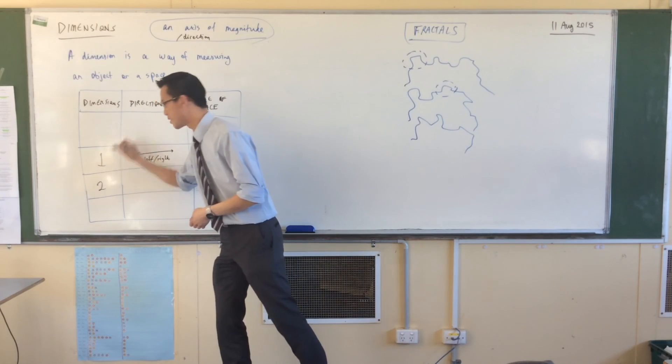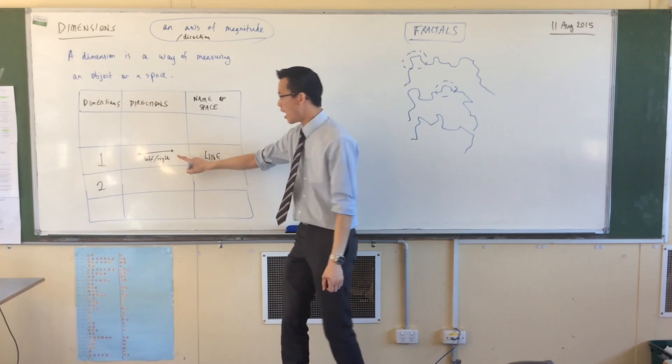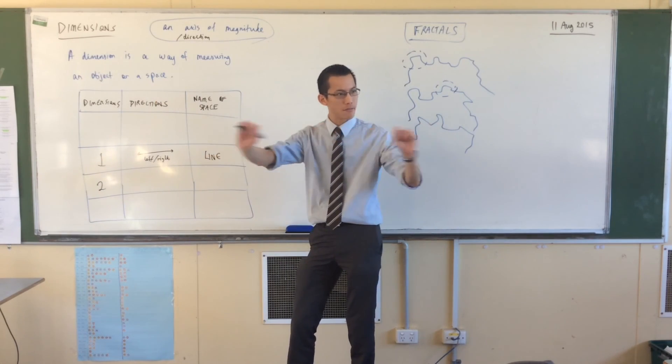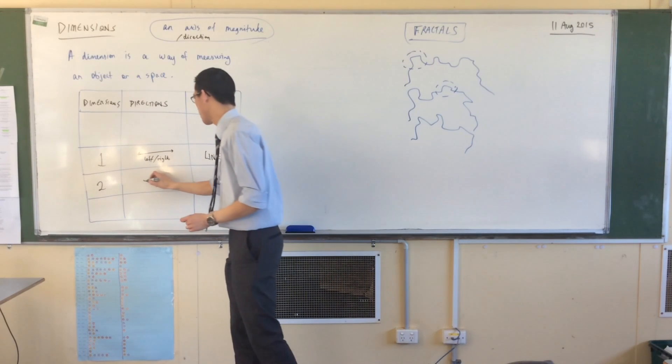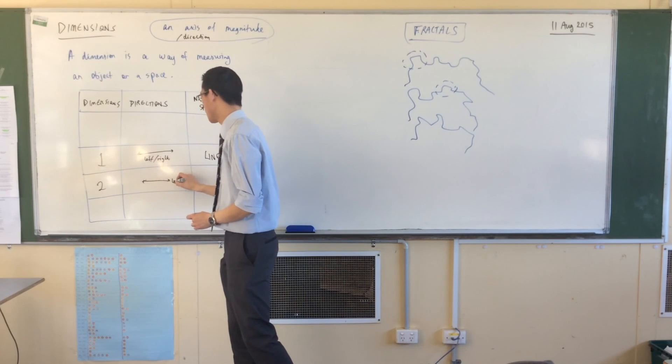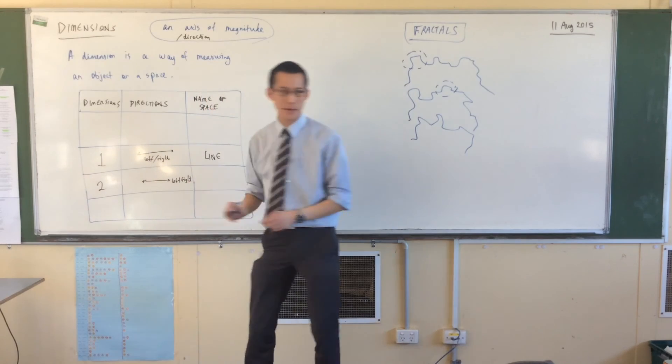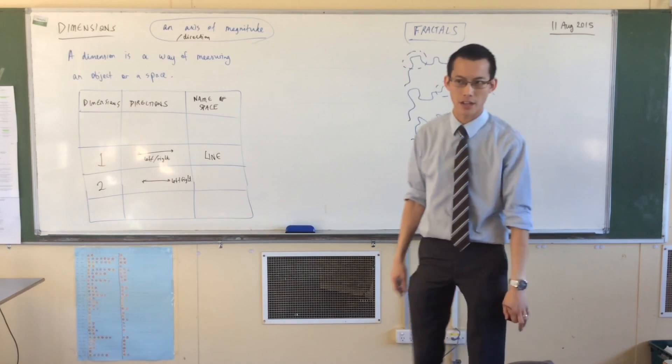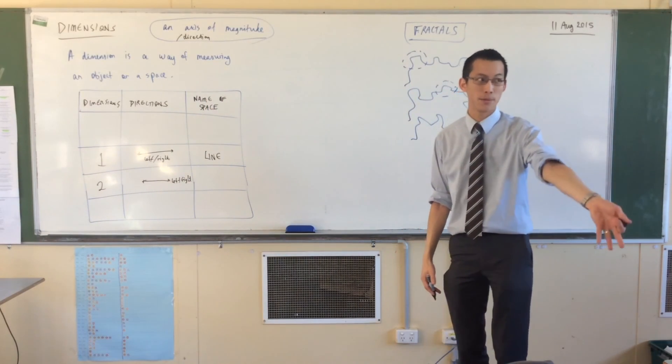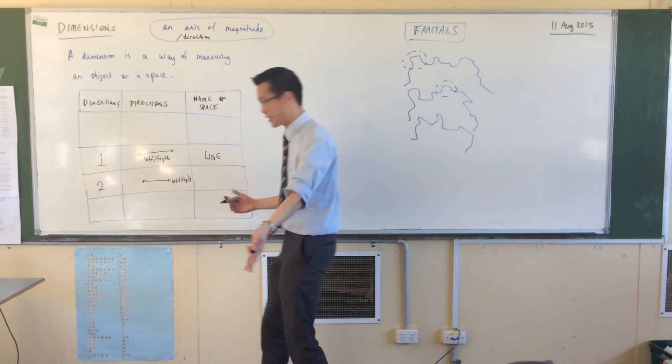Still familiar ground if we add a dimension. I'm going to retain this left-right axis of movement that I had before. Left-right. But if I want a second dimension, I need a second direction that I can move in. So, of course, you've seen this before. We have up-down.